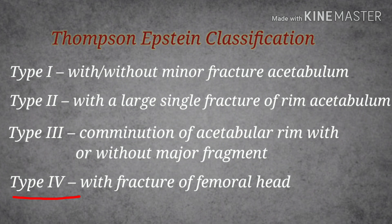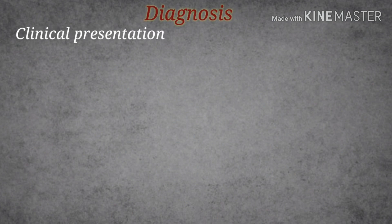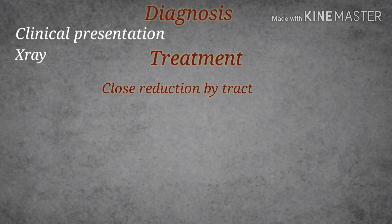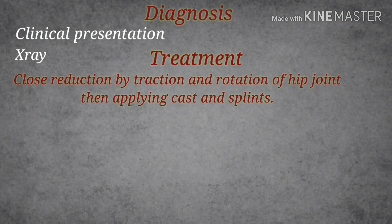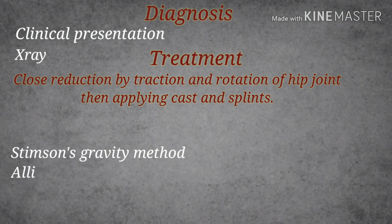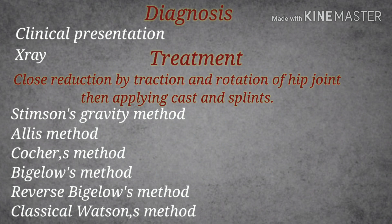Diagnosis is mostly based on clinical presentation and confirmed with X-ray imaging. For treatment, conservative methods are most commonly used — specifically closed reduction using various techniques. Methods used for anterior and posterior hip dislocations include Stimson's gravity method, Allis method, Kocher's method, Bigelow's method, reverse Bigelow's method, and the classical Watson method.